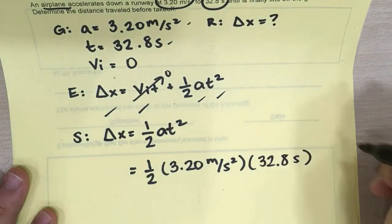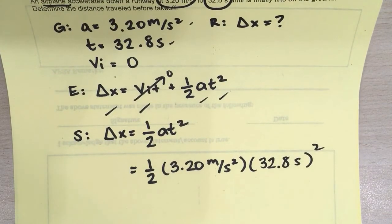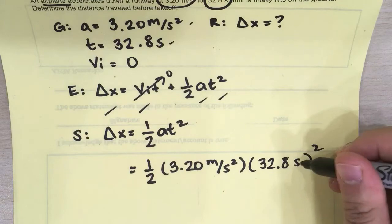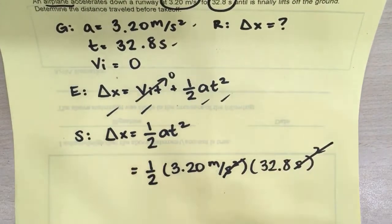And don't forget that entire thing is squared. So now we have something which we can plug into our calculator. Let's try it out. So the seconds will cancel out. You'll be left with a unit of meters, which is consistent to delta X.